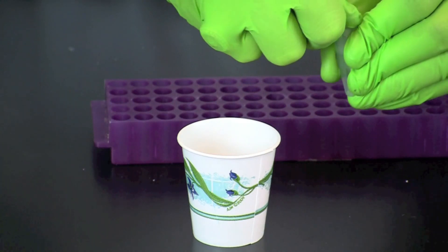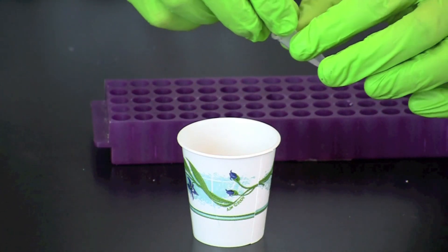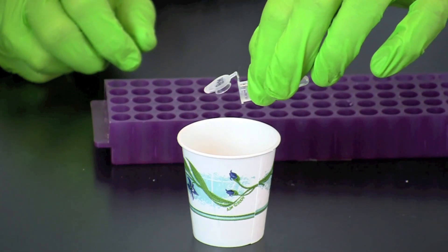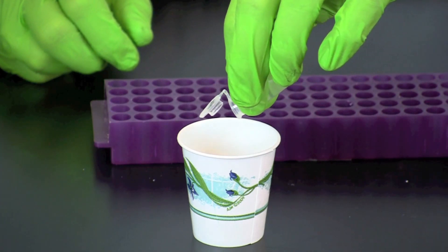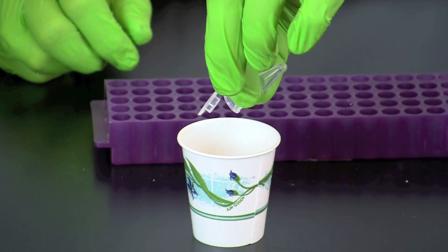After pelleting the cells, pour off the saline solution. Be careful not to lose the pellet. A small amount of saline should remain at the bottom of the tube.